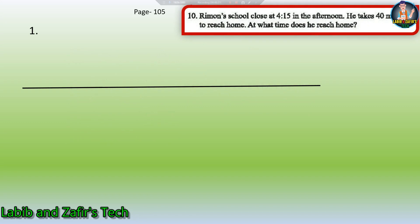Here is our first word problem. Remo's school closed at 4.15 in the afternoon. He takes 40 minutes to reach home. At what time does he reach home? At first it has been told that Remo's school closed at 4.15 and he takes 40 minutes. So we have to find out at what time he reaches his home.